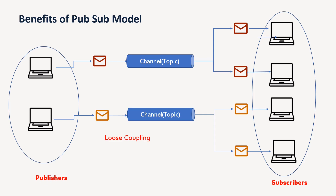Now let us understand some benefits of the pub-sub model. First, as already explained, loose coupling is there. Whatever the scalability — suppose you want to add publishers or more subscribers — you can do so at your own will, because there is no direct connection between these two components. They are loosely coupled. Even if you want to add more channels or topics, it is not a problem. By this model, we achieve a high degree of loose coupling. Second, it is highly scalable — you can add more and more publishers and subscribers because there is no dependency between them, making it very easy to scale.